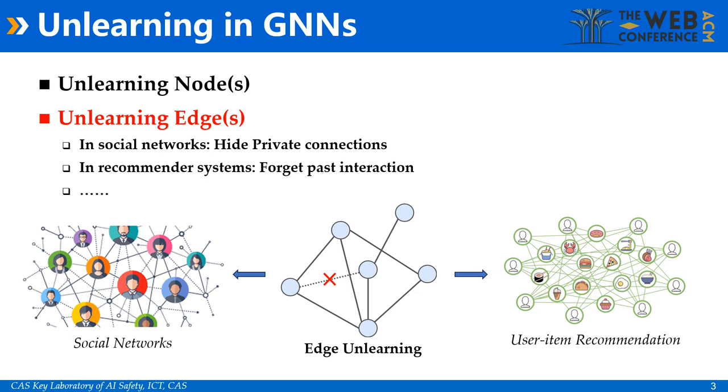For these instances, GNNs that have been trained on these graphs require timely updates to eliminate any influence of the data intended to be forgotten, while preserving performance on retained edges.